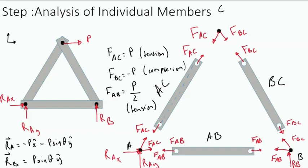Putting our solution together, we have that R_A is equal to negative P in the X-hat direction, minus P sine theta in the Y direction, and R_B is P sine theta in the Y direction. We have also solved for the forces in members AC, AB, and BC. We found that the force in member AC is P and that it is in tension. The force in member BC is minus P and it is in compression, and the force in AB is equal to P over 2 and this member is in tension. This is the generic method for solving the forces in the members of a truss system utilizing the method of joints.